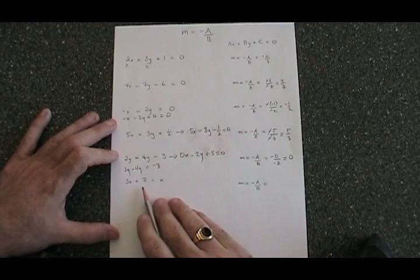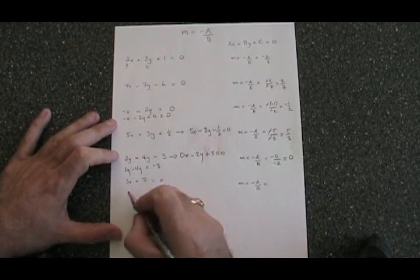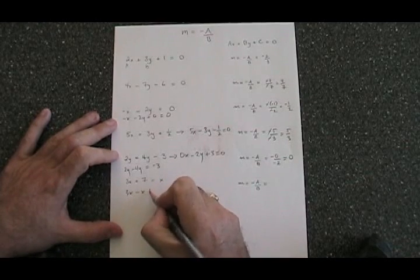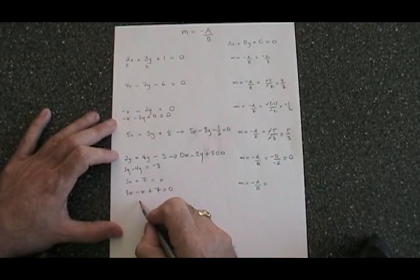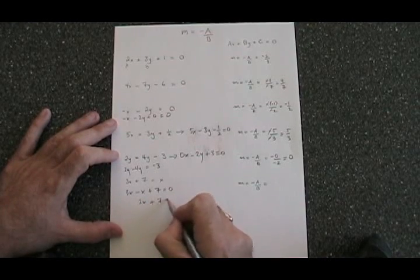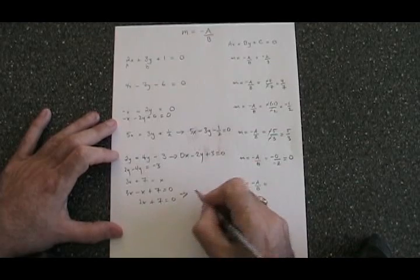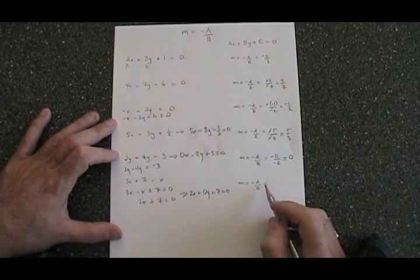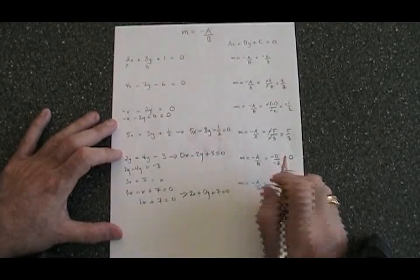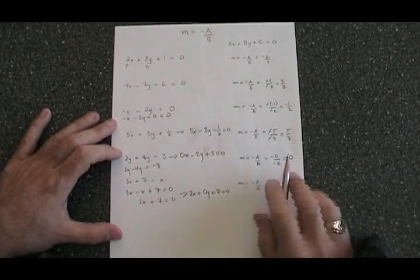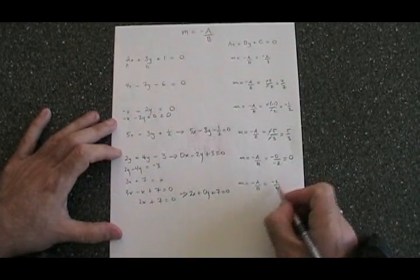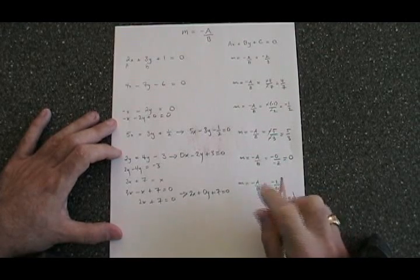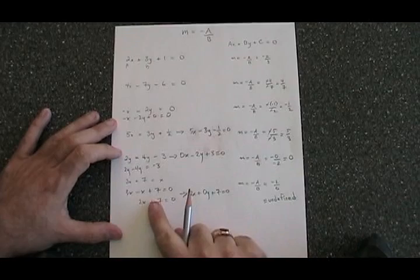In the last equation, we have no y. Again, we can use algebra. We can move the x from the right side of the equal sign to the left, where it becomes negative. 3x minus x is 2x. So we have 2x plus 7 equals 0. This can be rewritten if we wish: 2x plus 0y plus 7 equals 0. And when we do our negative a over b formula, we end up with negative 2 over 0. But of course, we cannot divide by 0. So this is an undefined slope. This is what will always happen when you have an equation with no y's in it.